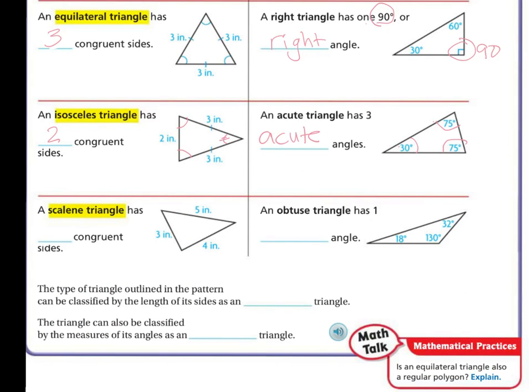A scalene triangle has no congruent sides. They're all different. So, you can see this one has three inches here, five inches there, four inches there. And then, an obtuse angle has one obtuse angle. So, this one's 130. That means an angle that is greater than 90 degrees.